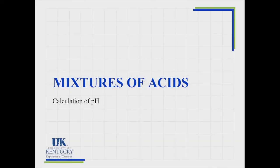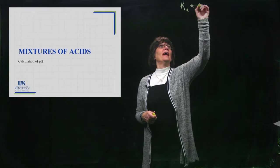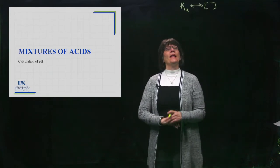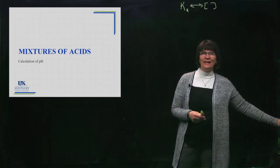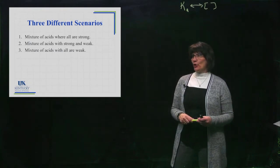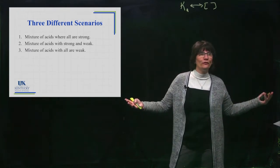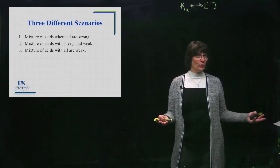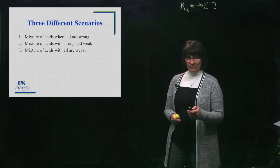We have learned how to go between K of an acid and the concentration, and now we're ready to kick it up a notch. We're going to start having mixtures of acids and calculate the pH of those mixtures. We're going to have three different scenarios: when we mix together two strong acids, mixtures where one is strong and the rest are weak, and what if there's multiple weak acids.